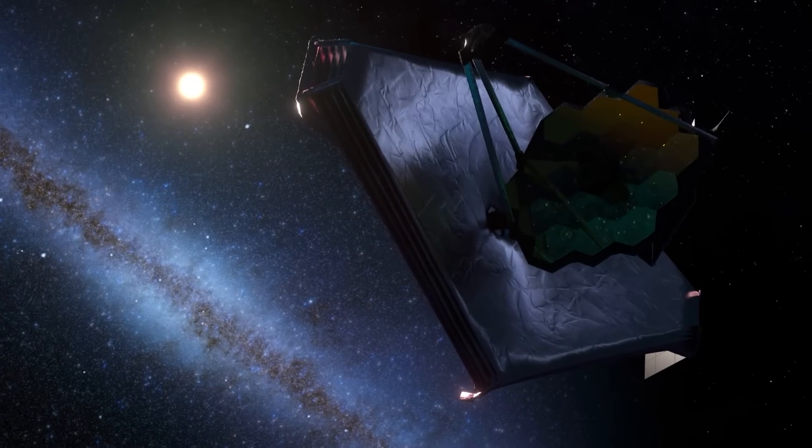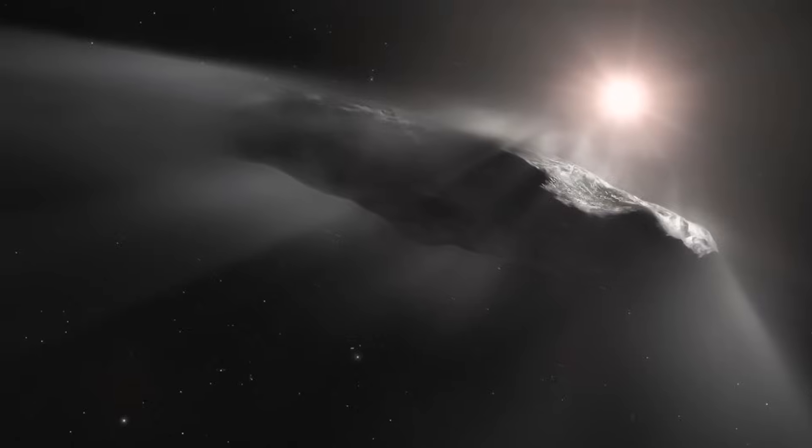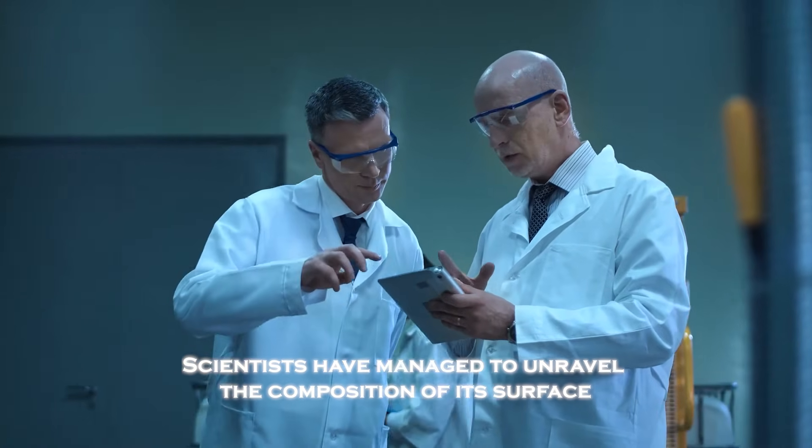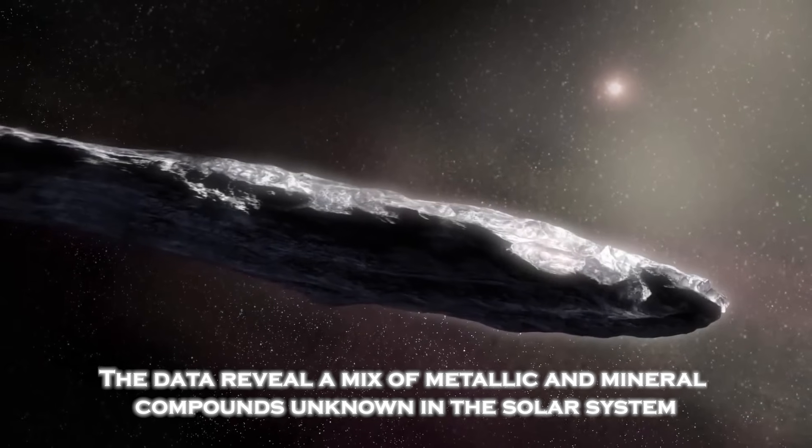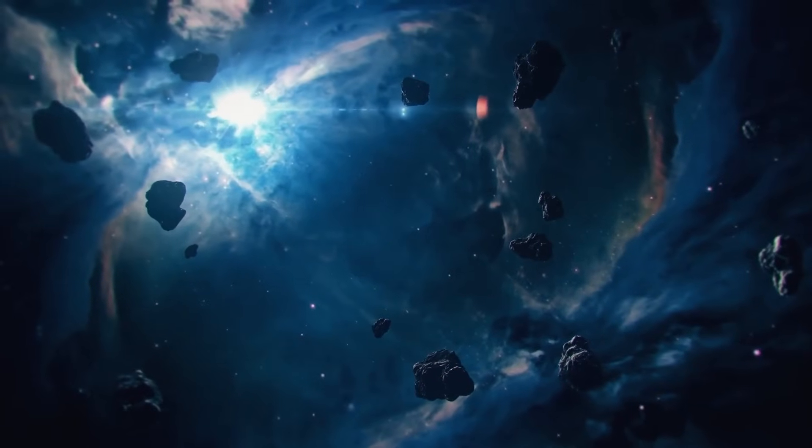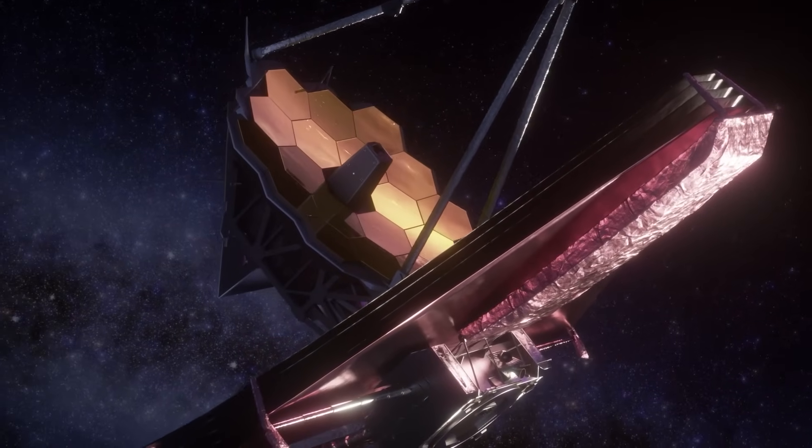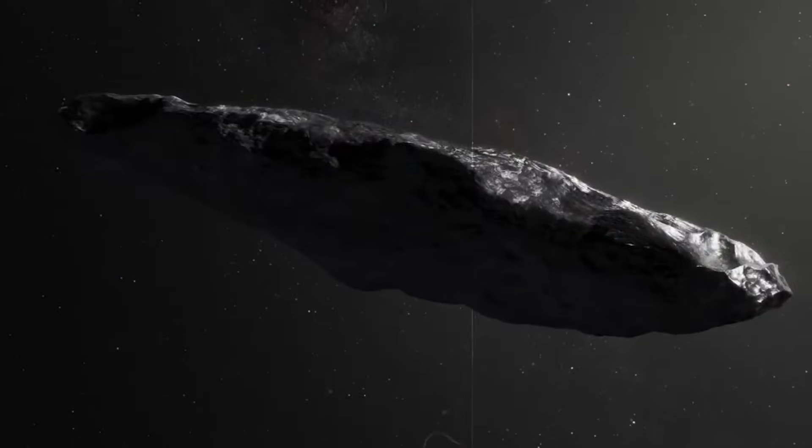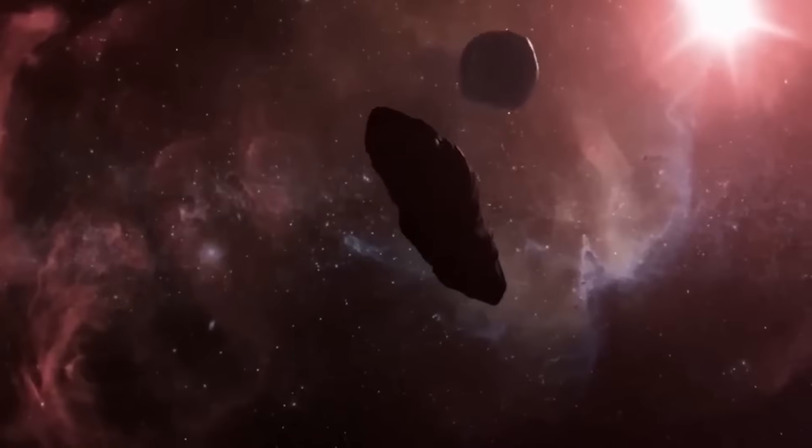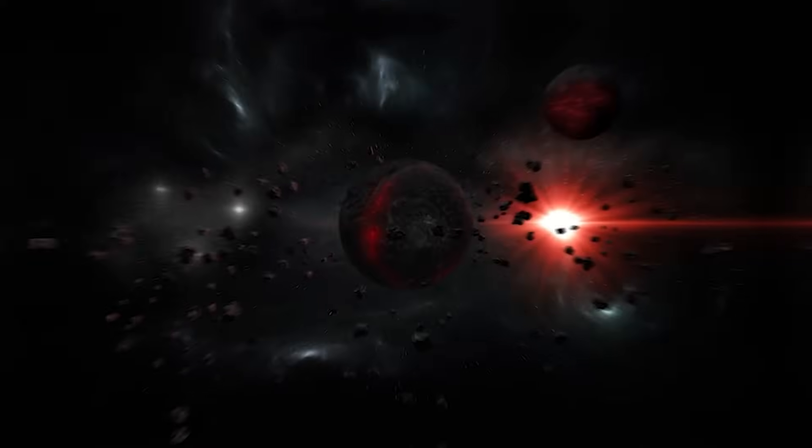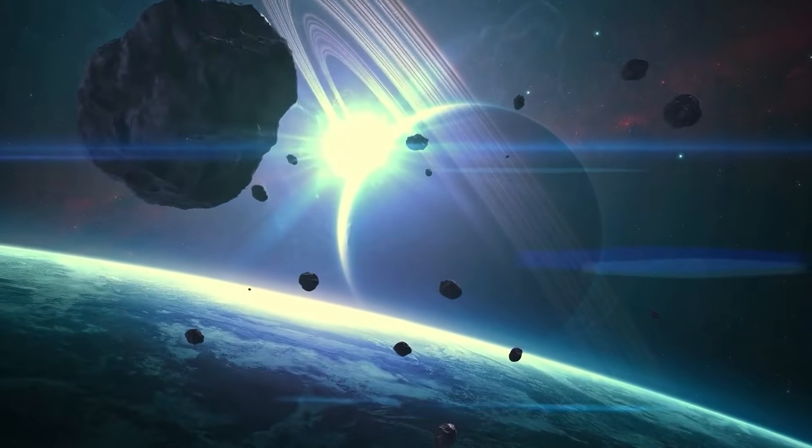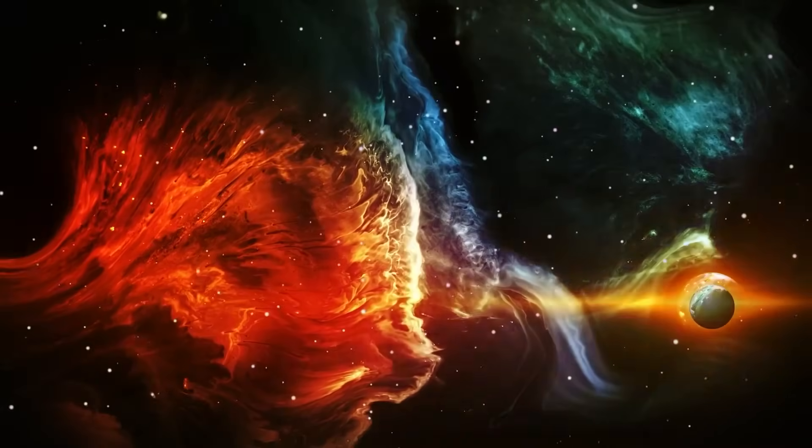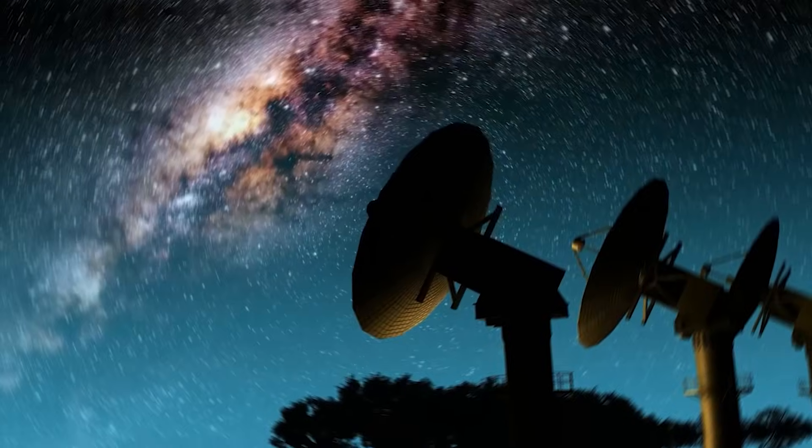Thanks to the James Webb telescope's ability to analyze the light reflected by Oumuamua, scientists have managed to unravel the composition of its surface. The data revealed a mix of metallic mineral compounds unknown in the solar system, along with traces of elements that could form organic molecules. Among the most fascinating findings is the presence of a highly reflective material that could explain its unusual brightness, as well as compounds that suggest Oumuamua formed in a young, dynamic star system. These discoveries offer key clues about processes occurring in regions of the universe where matter is organized in completely different ways than in our cosmic neighborhood.